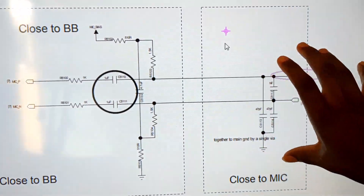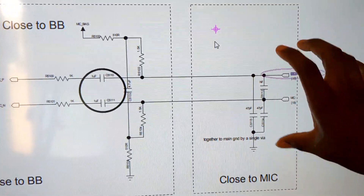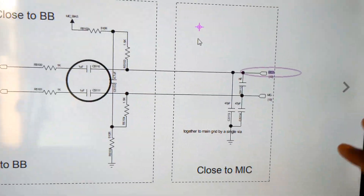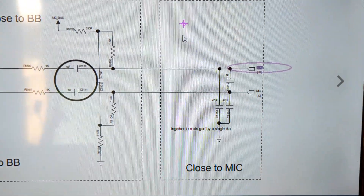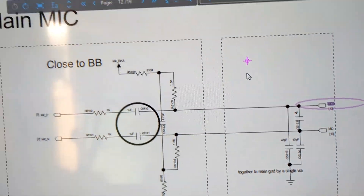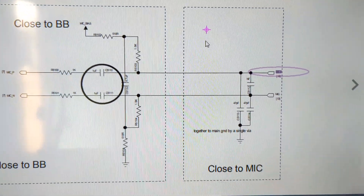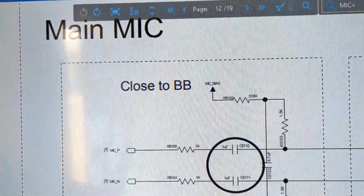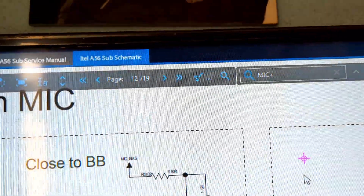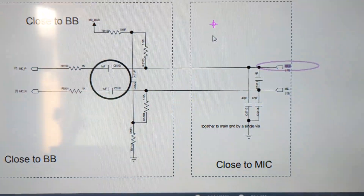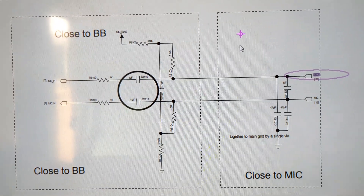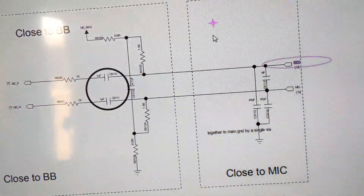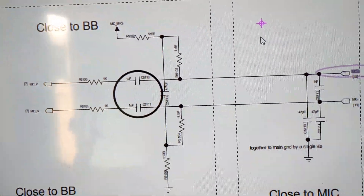This is one of the reasons why I always say that you really need a schematic diagram when you repair mobile phones or any electronic circuit. You can see this schematic right here — this is the mic circuit showing the main mic of the Itel A56. Using this diagram, you'll be able to jump a mic on that particular Itel phone.